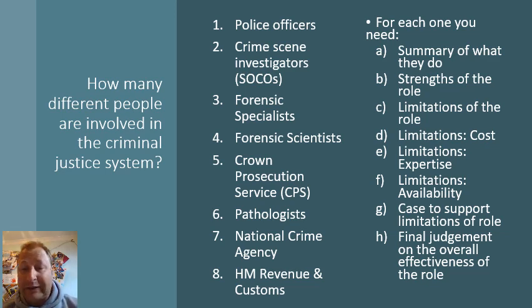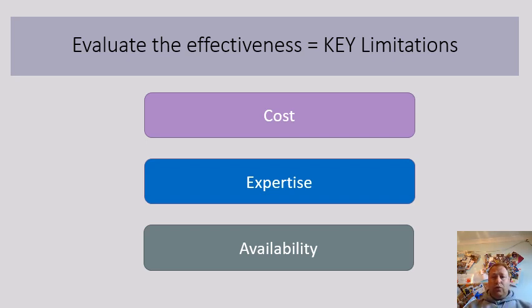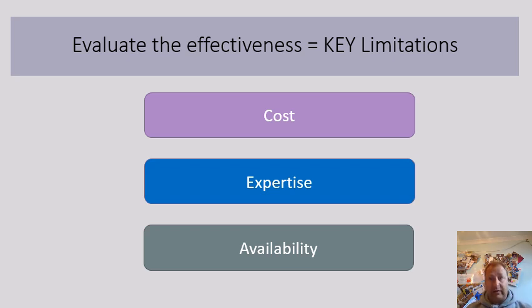To get the best marks, you need a final evaluation of the effectiveness. For the limitations element, the key areas are the cost of the role, how expert they are, and how readily available they are. You'll be doing loads of independent research — there are lots of links on the Moodle site to documents to help you, but you need to spend time reading and summarizing them.